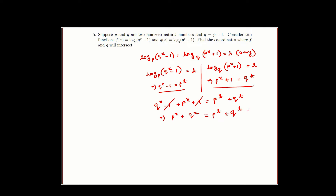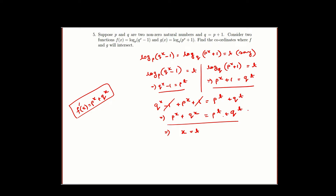Now, p and q are non-zero natural numbers, and if we write f'(x) equal to p^x + q^x, this is an increasing function. As seen in the lecture, these are one-one functions. So from p^x + q^x equal to p^t + q^t, since p and q are both natural numbers, this gives us x equal to t.